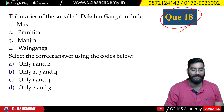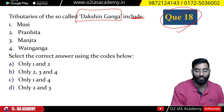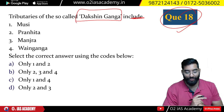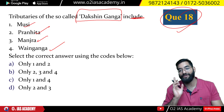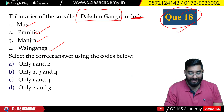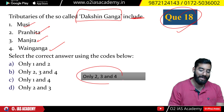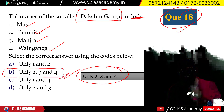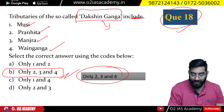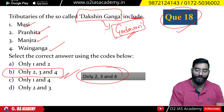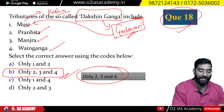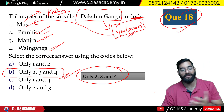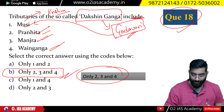Question number 18: Regarding tributaries — the answer is 2, 3, and 4. Musi is not a tributary of the river in question. Godavari is also called Dakshina Ganga — both names are used for it. The other tributaries listed are indeed Godavari's tributaries.